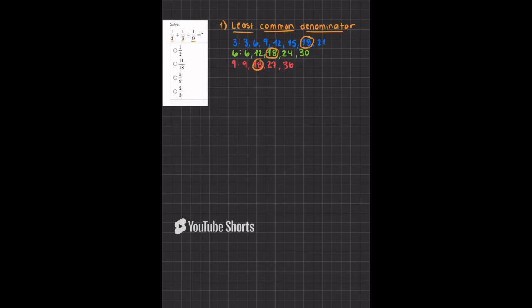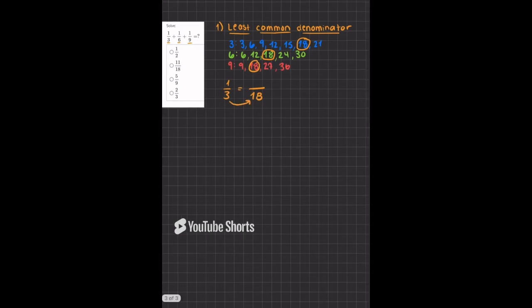We'll take this denominator of 18 and turn each fraction to have the same denominator. We'll take one-third and we know that it has to turn into a fraction with a denominator of 18. What did we do from 3 to 18? We multiplied by 6. So if I multiply the denominator by 6, I'll also have to multiply the numerator by 6, giving me 6/18.